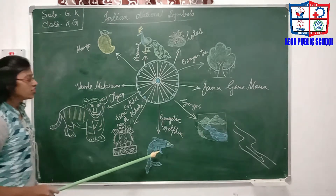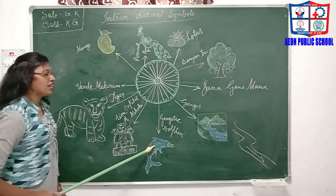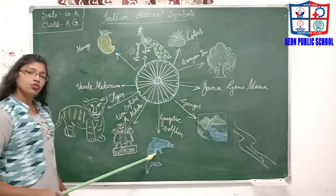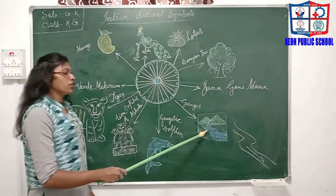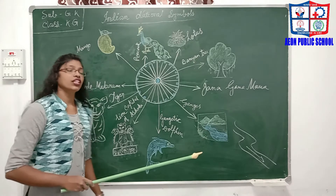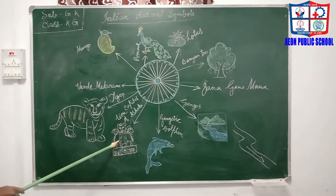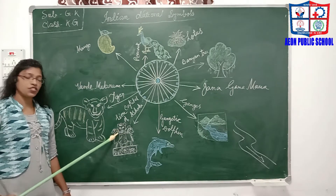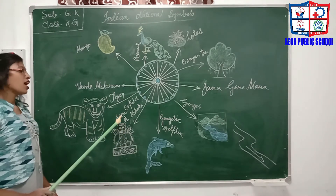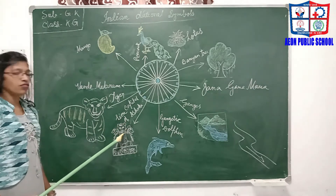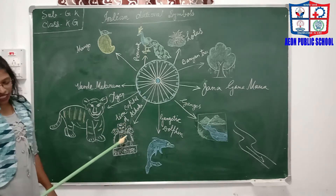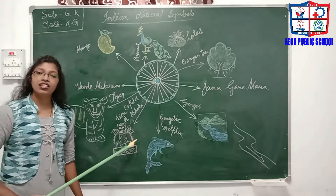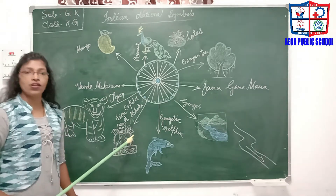The National Aquatic Animal is the Gangetic Dolphin. It also shows the purity of the Ganges. The National Emblem of our country is the Lion Capital of Ashoka. It shows the royalty and leadership of our country.